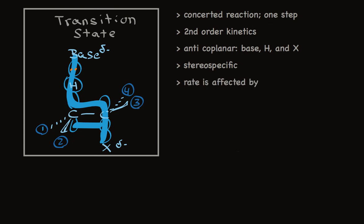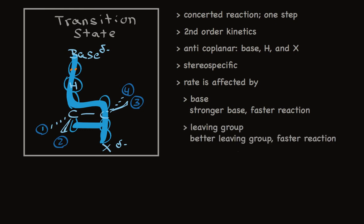The rate is affected by the base. The stronger the base, the faster the reaction. The more readily it pulls off a proton. The leaving group. The better the leaving group, the faster the reaction. The better this halide is at accommodating negative charge, the more readily it leaves. So the reaction is faster.